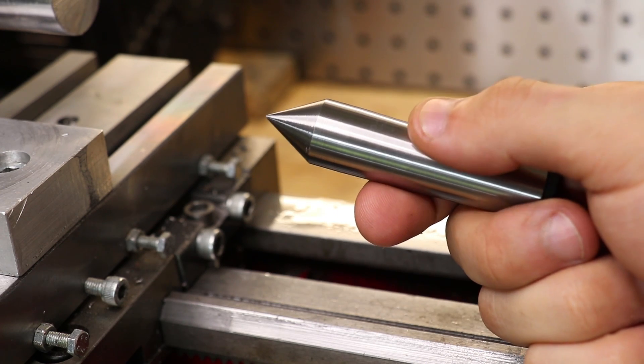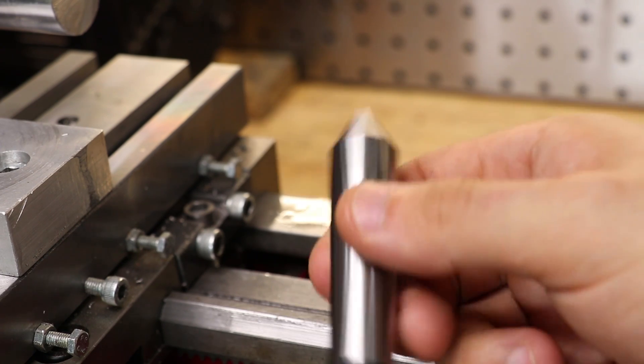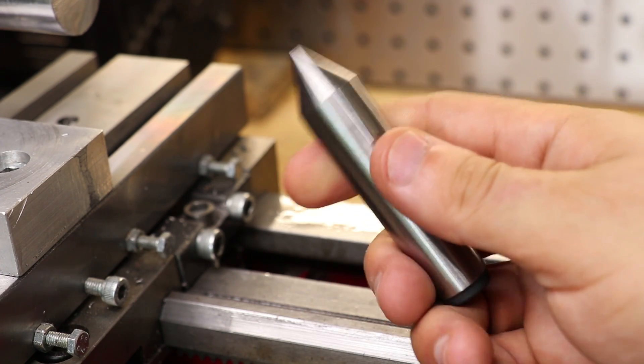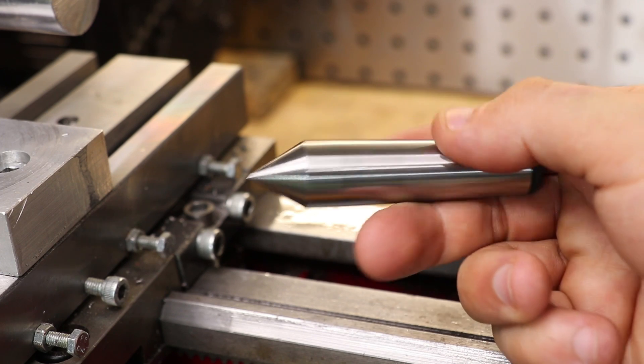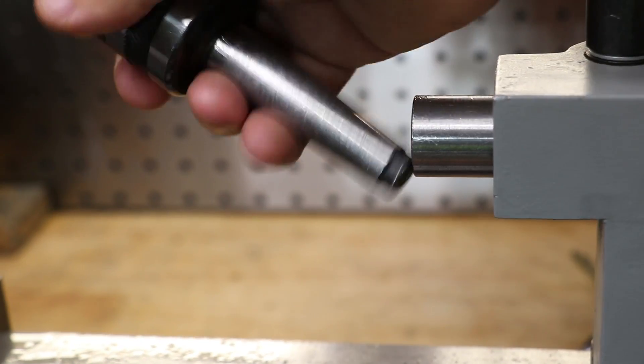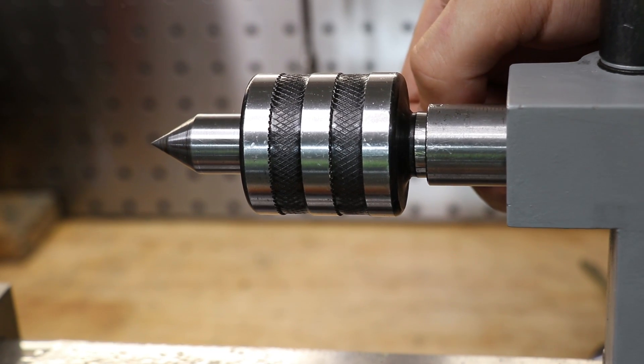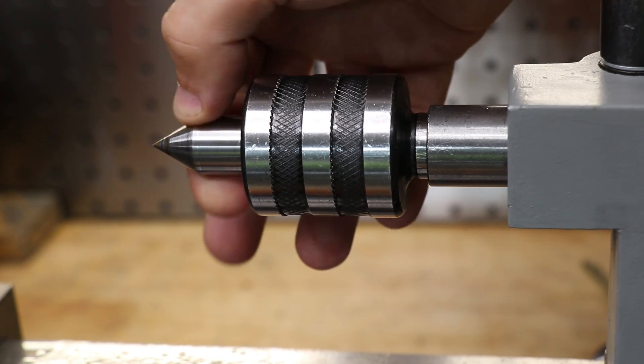What I have here is the dead center that came with the lathe. I'm sure most lathes come with one for the tailstock, and to be completely honest, I don't think I've ever used this one. The live center is just more convenient, and the taper is too small to be used in the headstock.